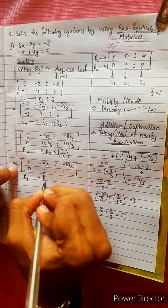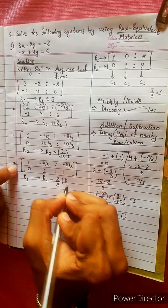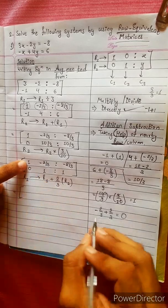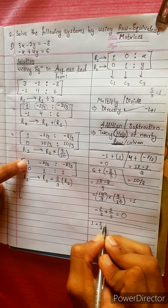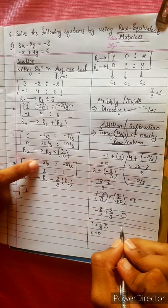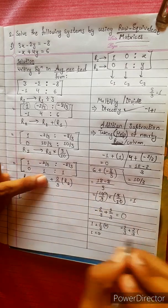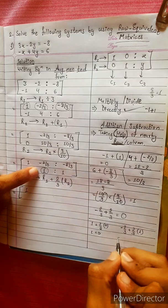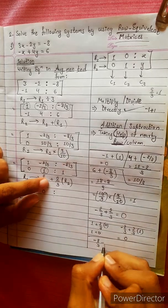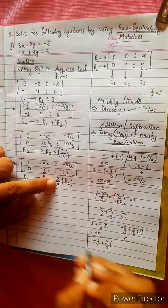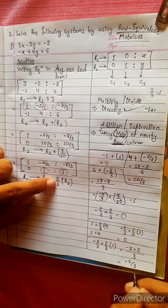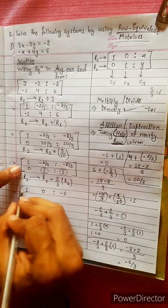R1 changes into R1 plus 2 by 3 times R2. R1 reformed: 1 plus 0 equals 1. Minus 2 by 3 plus 2 by 3 times R2 equals 0. Minus 8 by 3 plus 2 by 3 times R2: 3 minus 8 plus 2 gives minus 6 by 3 equals minus 2. Result: 0, 1, minus 2.